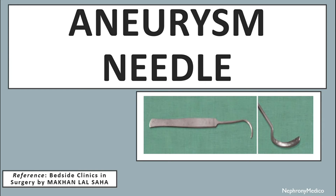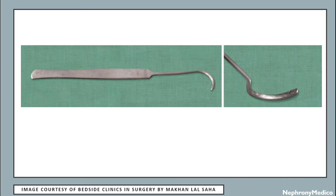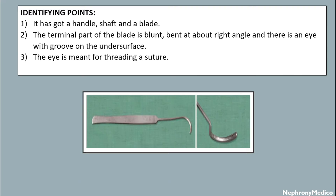Hello and welcome. Let's talk about the aneurysm needle. This is a picture showing the aneurysm needle and its identifying points. It has a handle, shaft, and a blade. The terminal part of the blade is blunt and bent at a right angle.